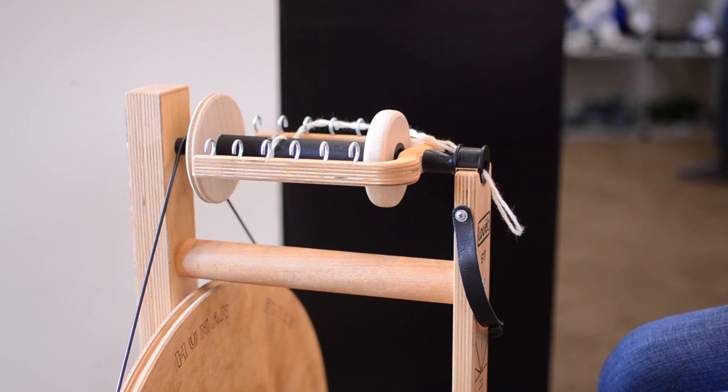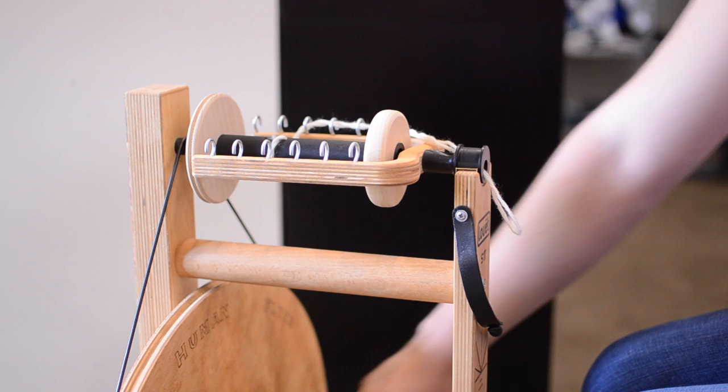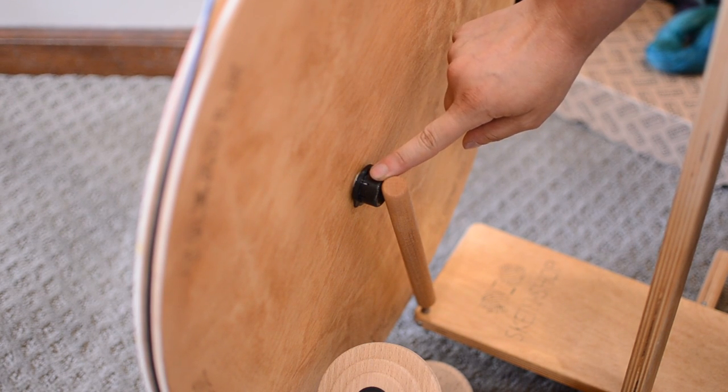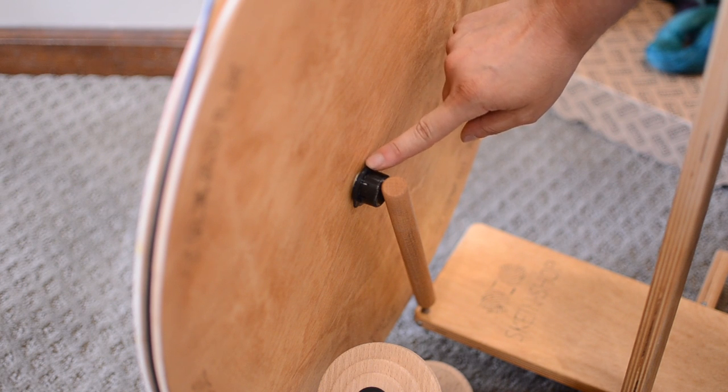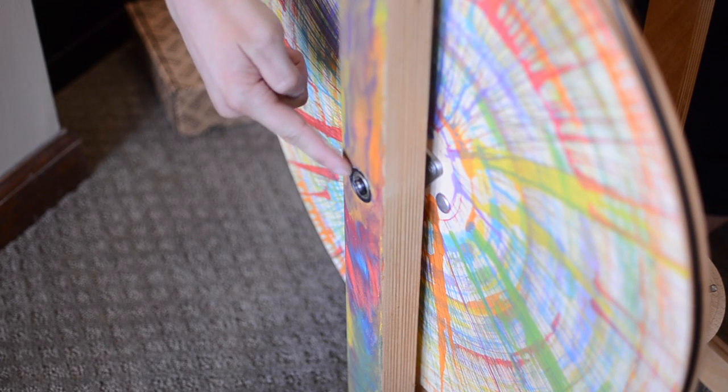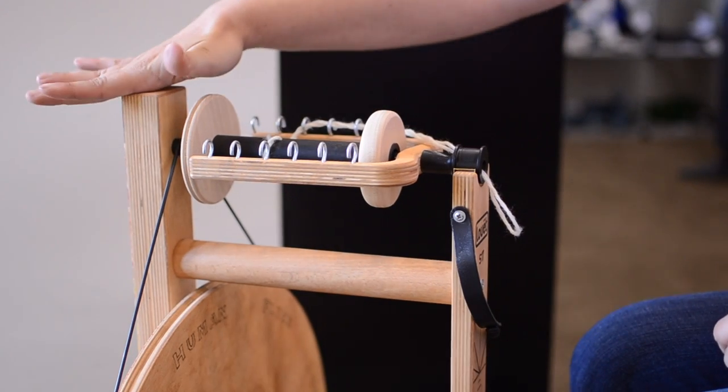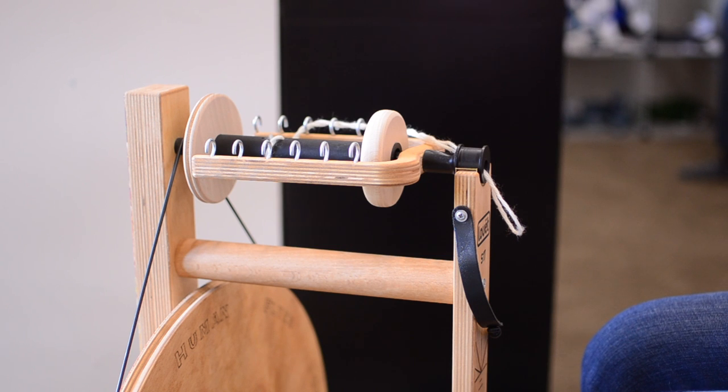I do want to point out that there are two places on the Louet wheel that should never ever ever under any circumstances be oiled. And that's the bearings on the drive wheel. So you have one on the front, it's where the conrod attaches to the drive wheel, and you have one on the back beam, where the drive wheel attaches to the back upright. Those are sealed self-lubricating bearings, and if you try to oil them, what the oil is going to do is actually destroy the seal, and then all of the lubrication that was sealed in is going to fall out, and your wheel is not going to work well. So never ever ever oil any of the bearings on the drive wheel.